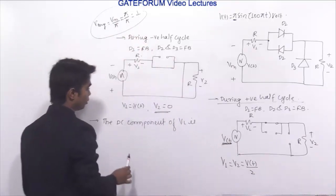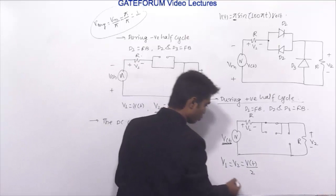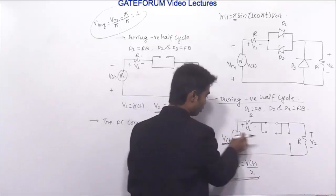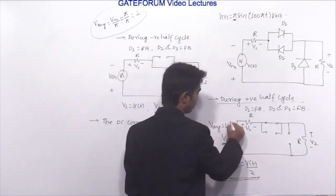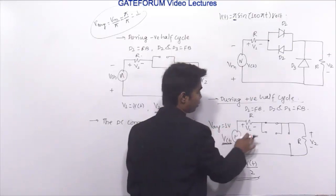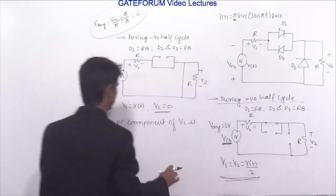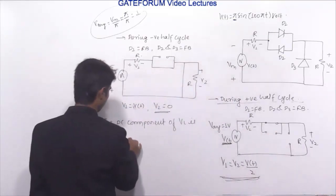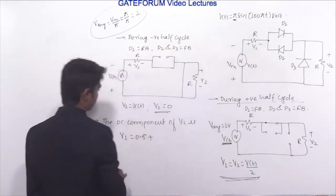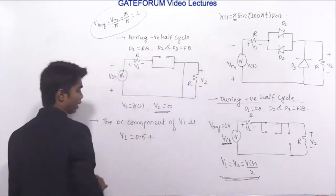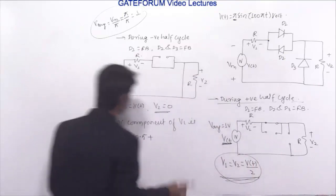This 1 volt is divided into 2 parts across the two resistors. So V1 during the positive half cycle contributes 0.5 volt. During the negative half cycle, there is also a V1 component, and we need to find its average value. Two diodes are conducting and the direction of current is the same, so this also behaves as a half wave rectifier.